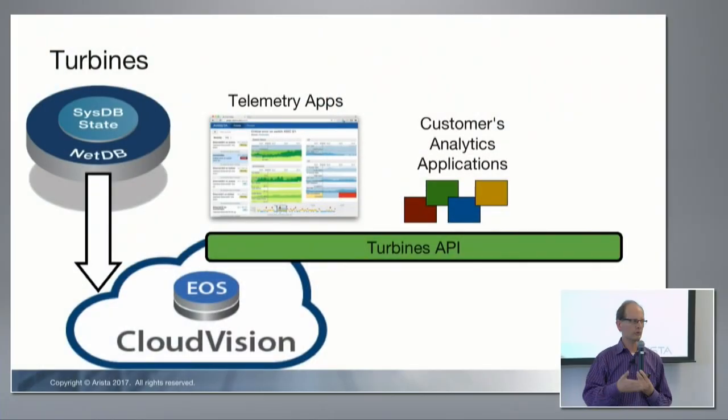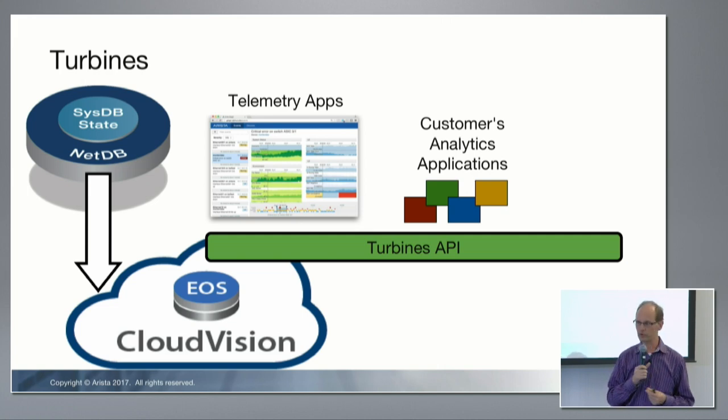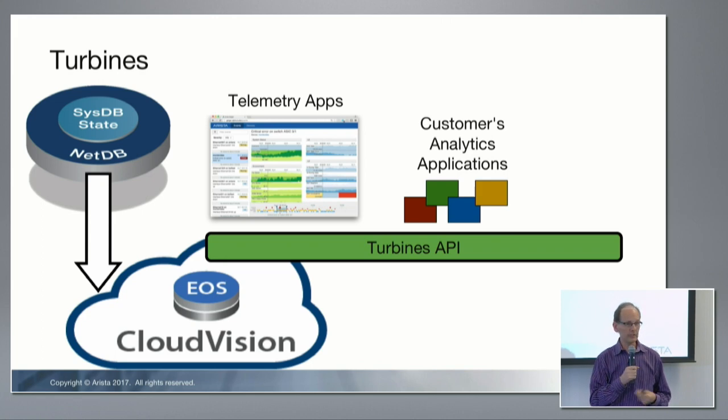The fourth interface is Turbines. What we've done with CloudVision is make it a back-end for receiving NetDB streaming. Your own on-premises CloudVision deployment can receive streams of state from all of your switches and store that state in HBase.